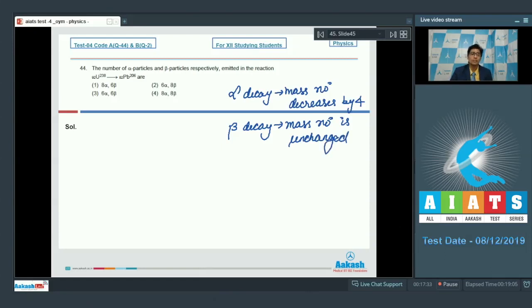Now in this particular question, the total change in mass number is 238 minus 206. Now this will be equal to 32. Let us assume that therefore we can write that n into 4 is equal to 32, which means that n is equal to 8.